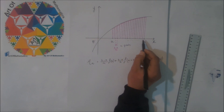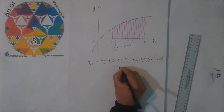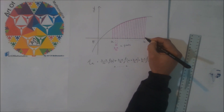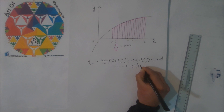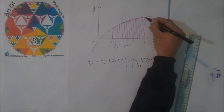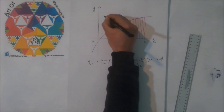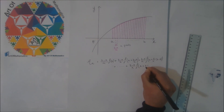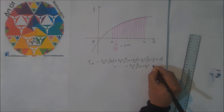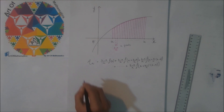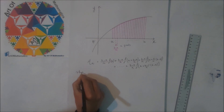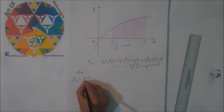Until we reach the last rectangle — the area of the last rectangle — each area is equal to B minus A divided by N, multiplying by the corresponding function value at that point. So let's simplify the expression of AN, which equals B minus A divided by N.